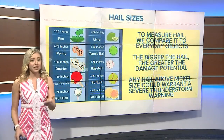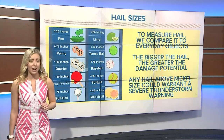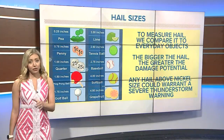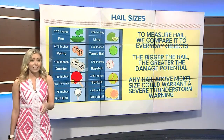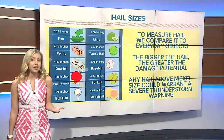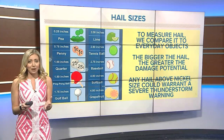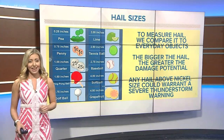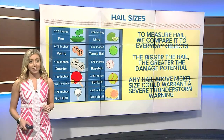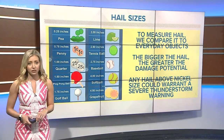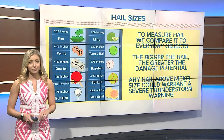To measure hail, we compare it to everyday objects. Hail can be very tiny, like the size of a pea, or it can grow as big as a grapefruit. Any hail larger than a nickel can warrant a severe thunderstorm warning.